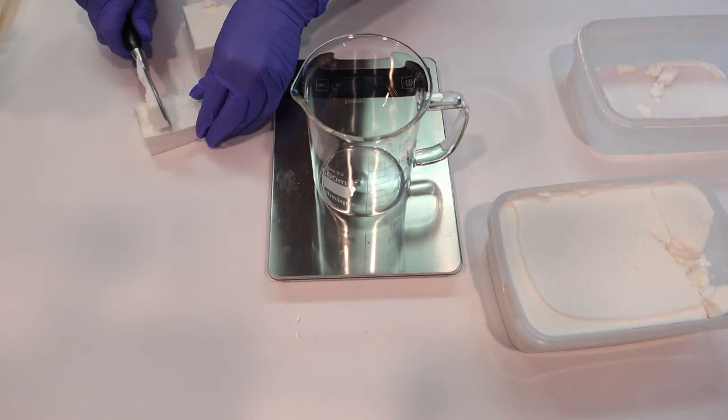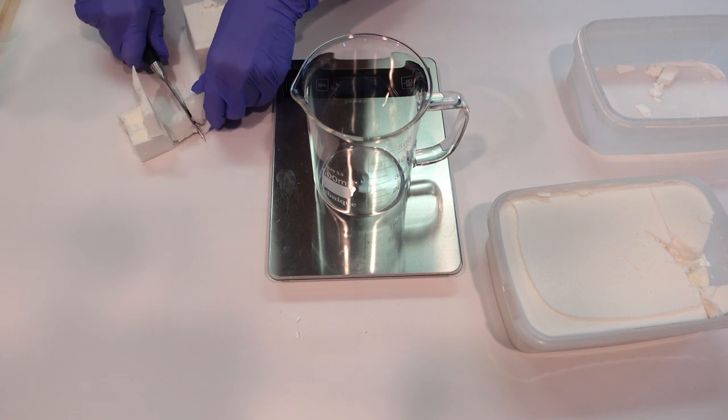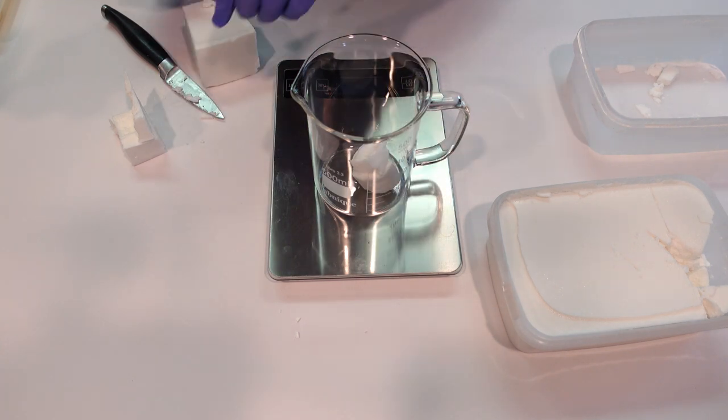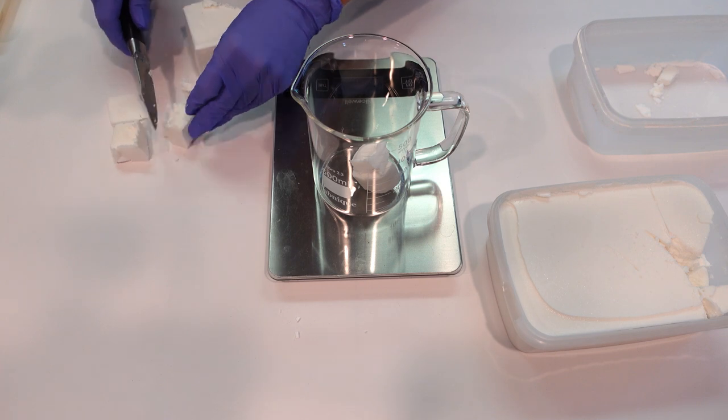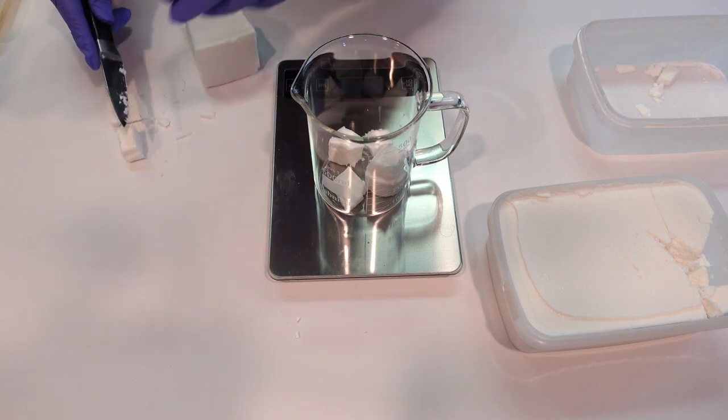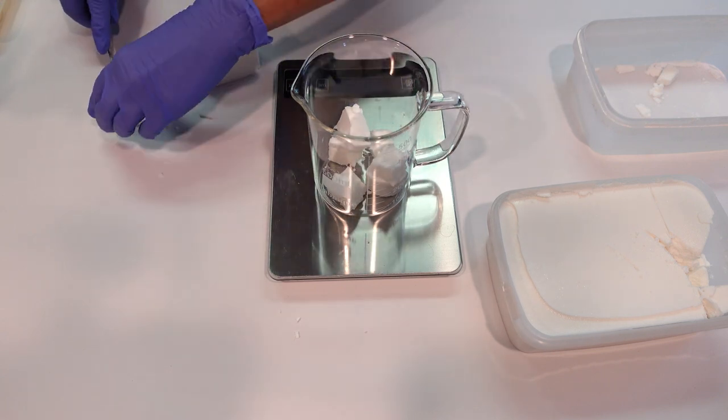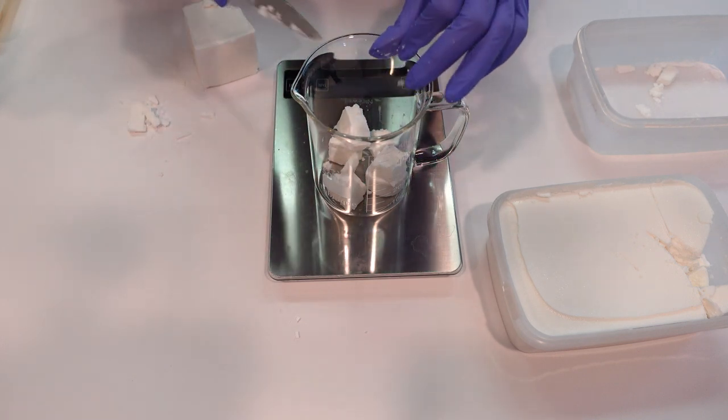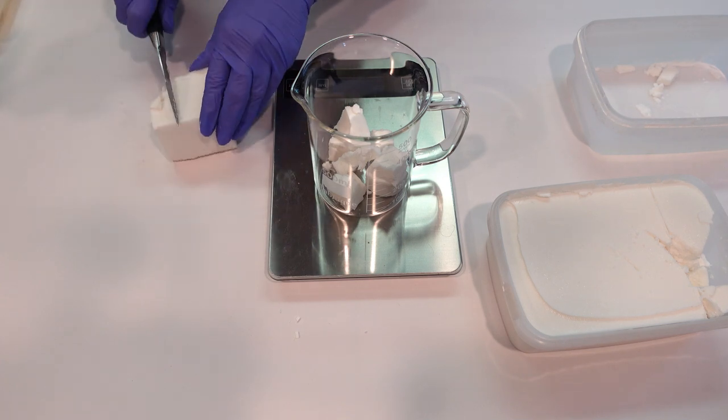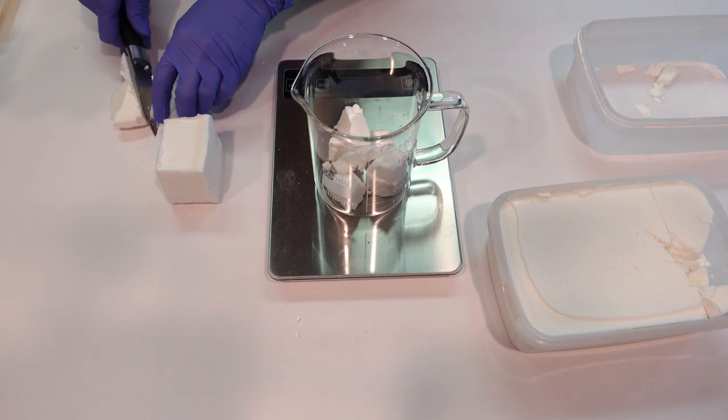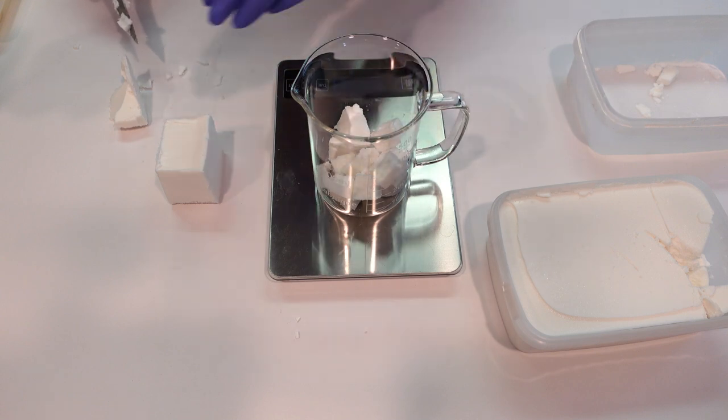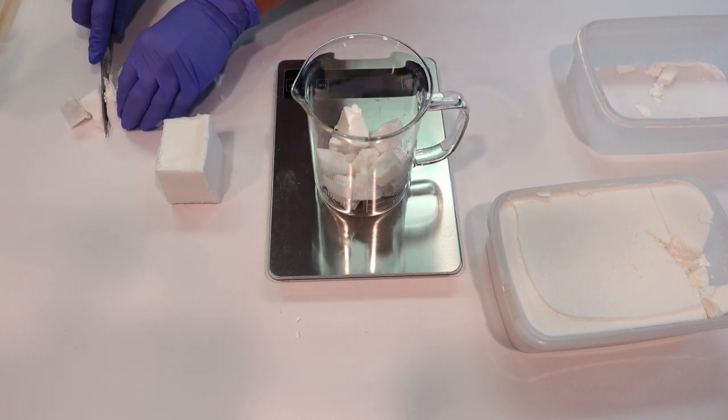The base itself is a very opaque white, and when you melt it you'll see that it goes completely clear, but it does set back up opaque like this. So something to consider when you're adding color is it's not going to get very bright in color because you have a very opaque white base to this soap, so your colors are going to come out a little bit more muted.